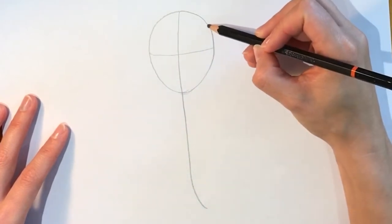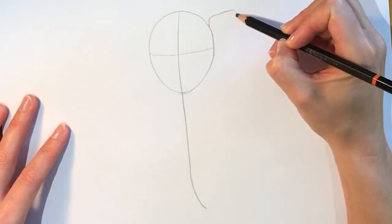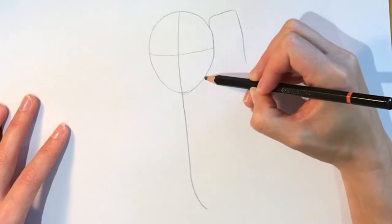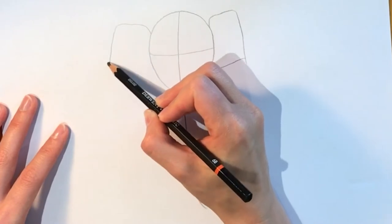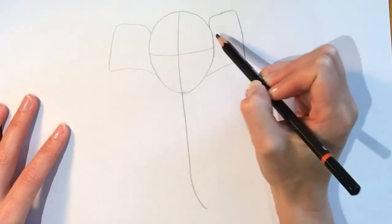Now we're going to be doing the ears, so do one ear on this side, just a rough shape like that, and another ear on the other side. Again, this is all rough.